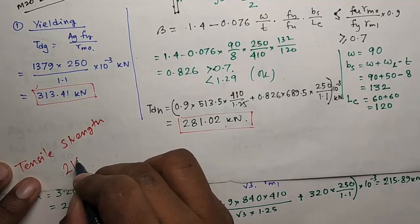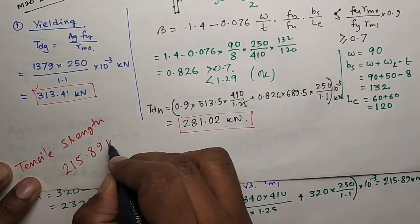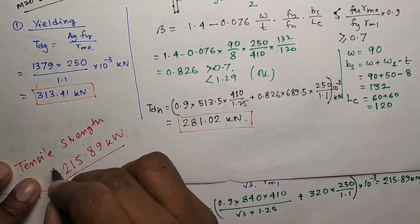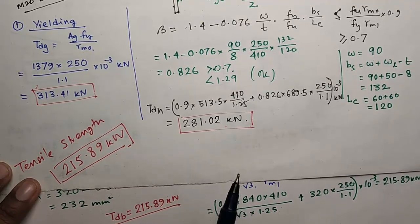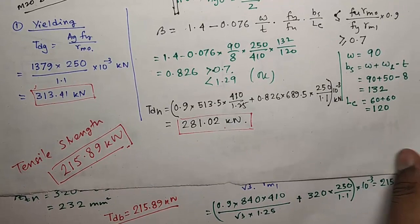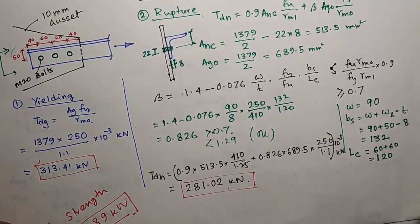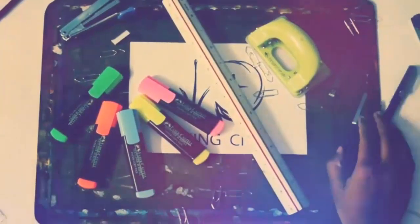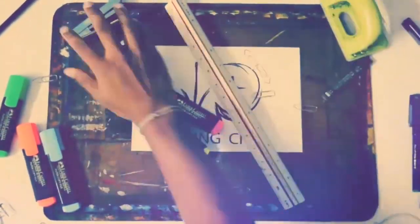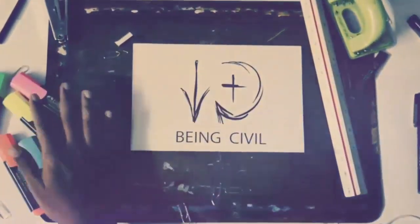This is the final capacity of single angle L90x90x8 connected by three M20 bolts to a 10 millimeter thick gusset. Hope you like this video. Give it a thumbs up. Stay subscribed with my channel. See you in the next video.